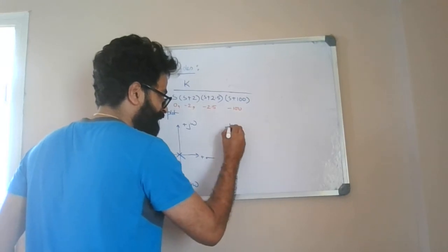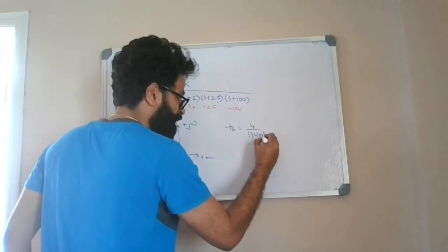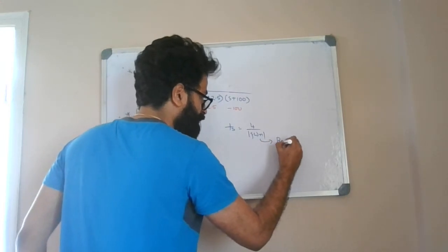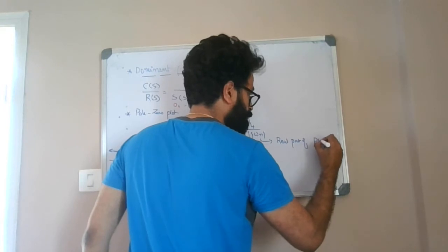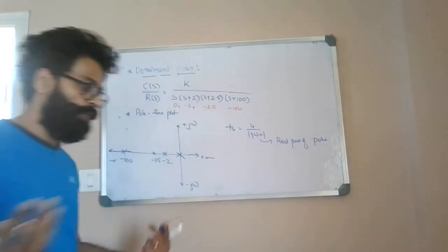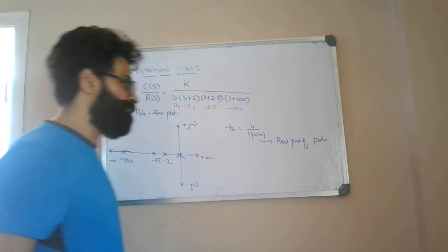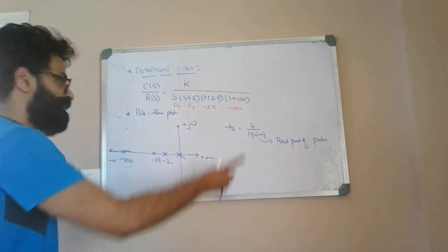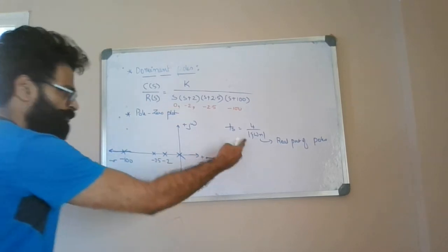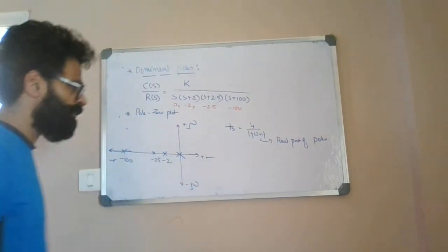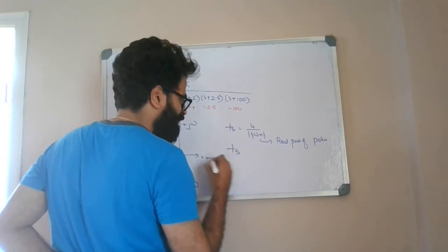Recall that settling time T_s is given as 4 divided by zeta*omega_n, where zeta*omega_n is the real part of the poles. If you have complex conjugate poles, take only the real part; similarly for real roots, take only the real part. So settling time increases with a decrease in the zeta*omega_n value.